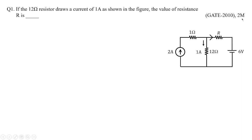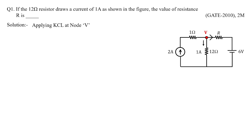It's a 2-marks problem, so you need to be careful in order to solve this kind of problem. You may feel that by applying mesh analysis or node analysis you can easily get the value of resistance, but you have to be careful. I'm going to apply KCL at node V, which I have identified.